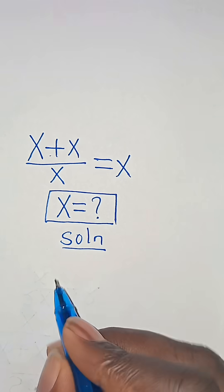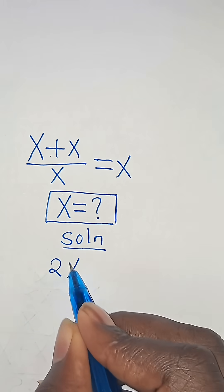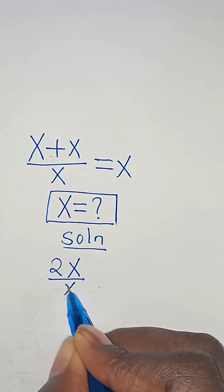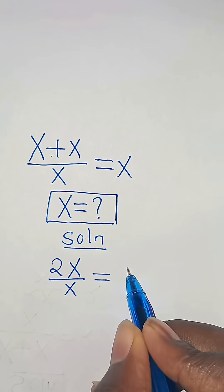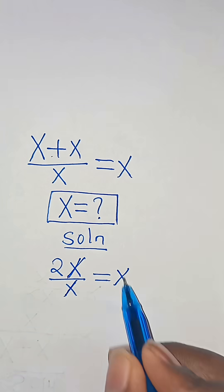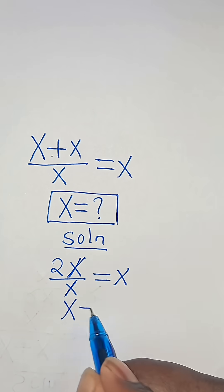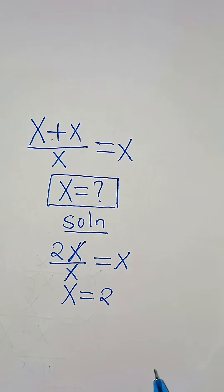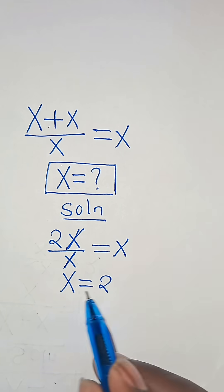So x plus x, this is 2x divided by x, this is equal to x. Now if you simplify here, x over x simplifies, so this means that x is equal to 2. But now this will give us only one solution.